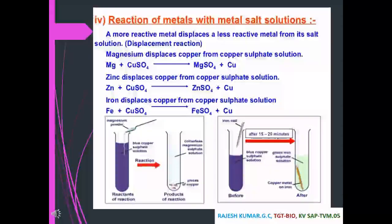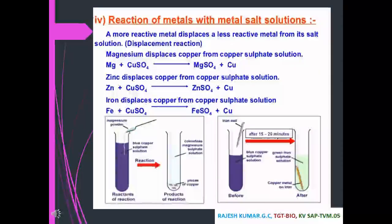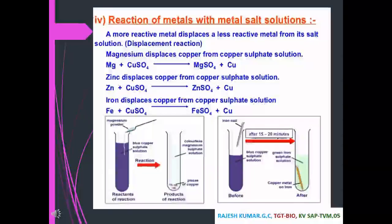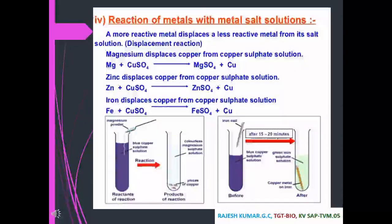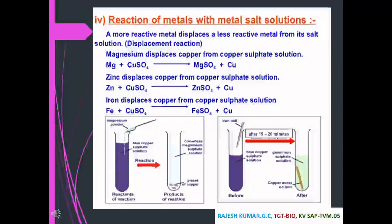Reaction of metals with metal salt solutions: a more reactive metal displaces a less reactive metal from its salt solution — this is called a displacement reaction. For example, magnesium displaces copper from copper sulfate solution, and iron displaces copper from copper sulfate solution.